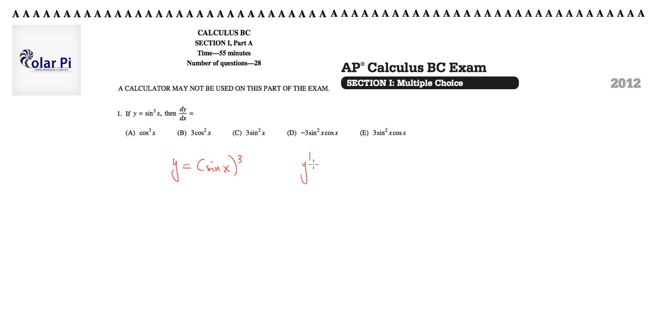Using chain rule, y prime (which is the same as dy/dx) will equal 3 times (sine x)² times the derivative of the inside function. Since the inside function is sine x in the composition, the derivative is cosine x.